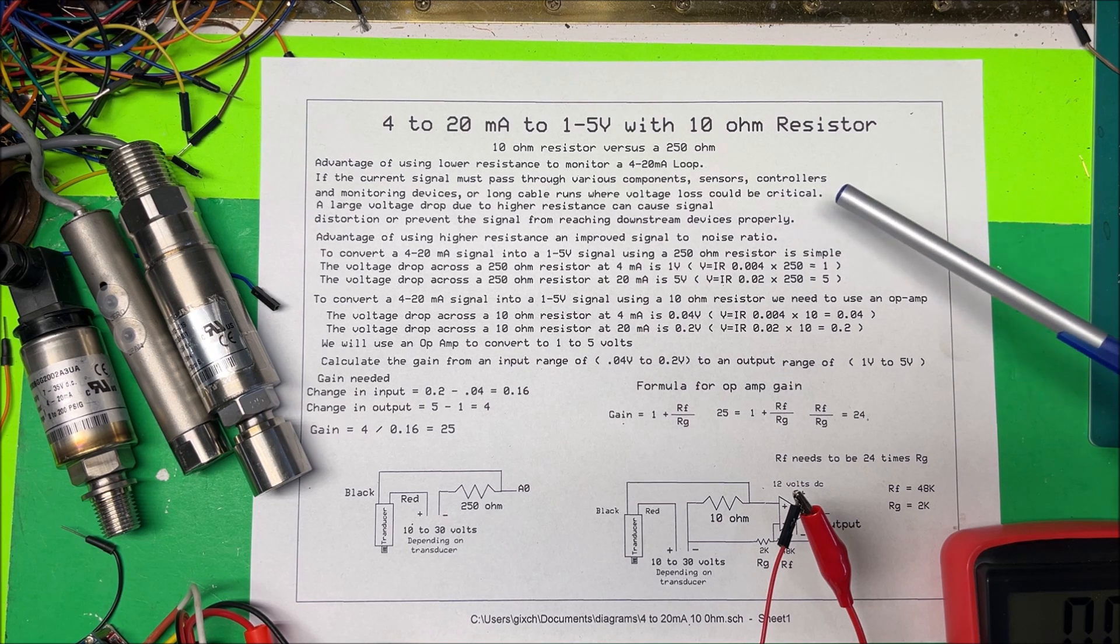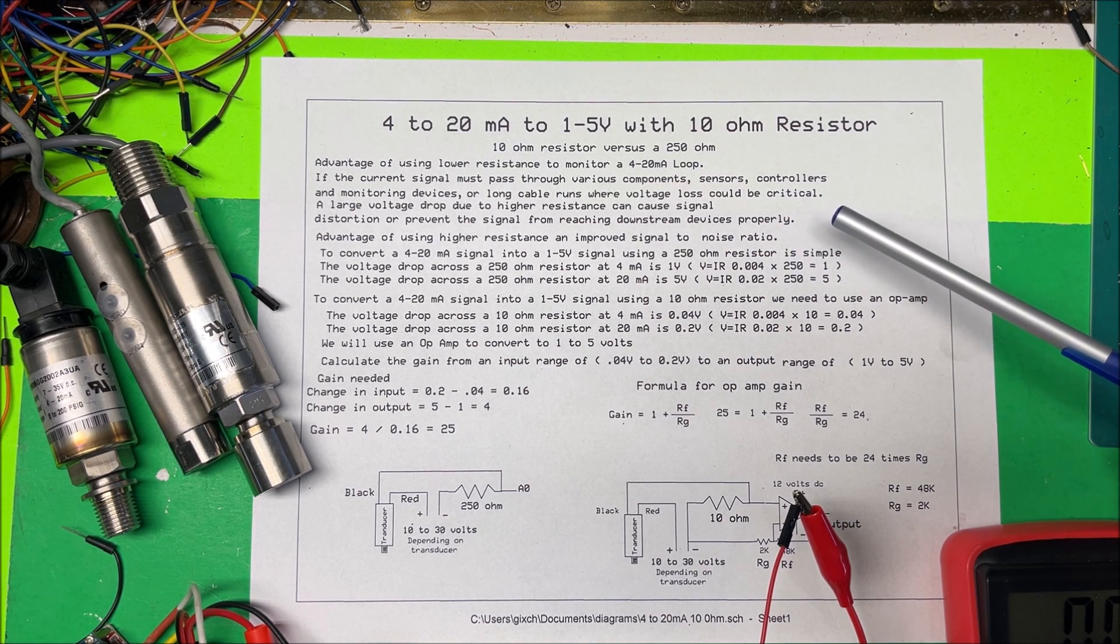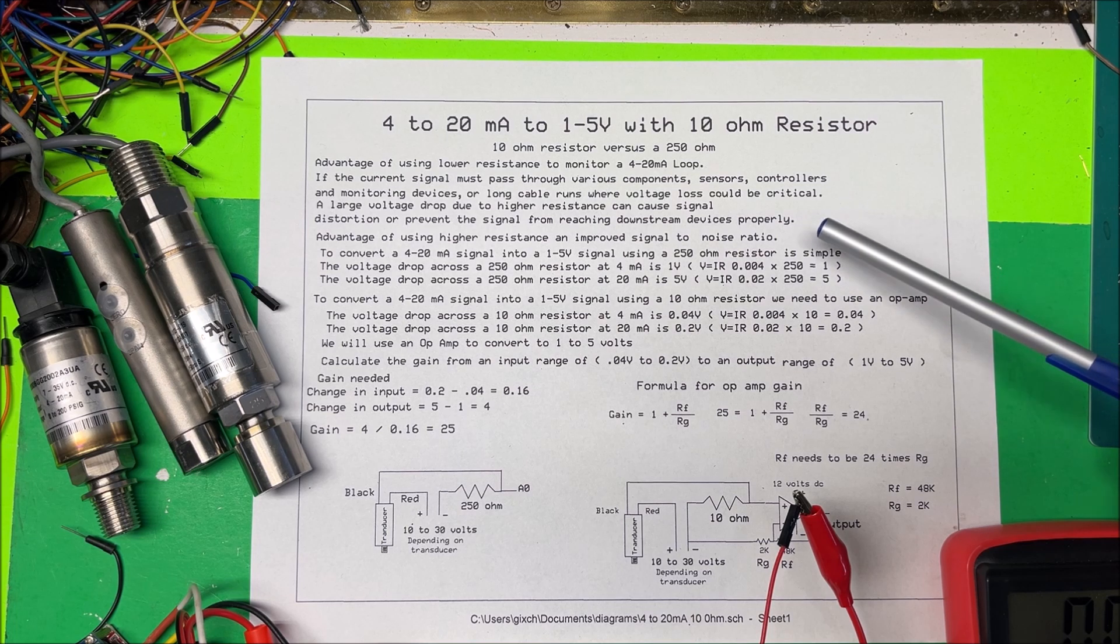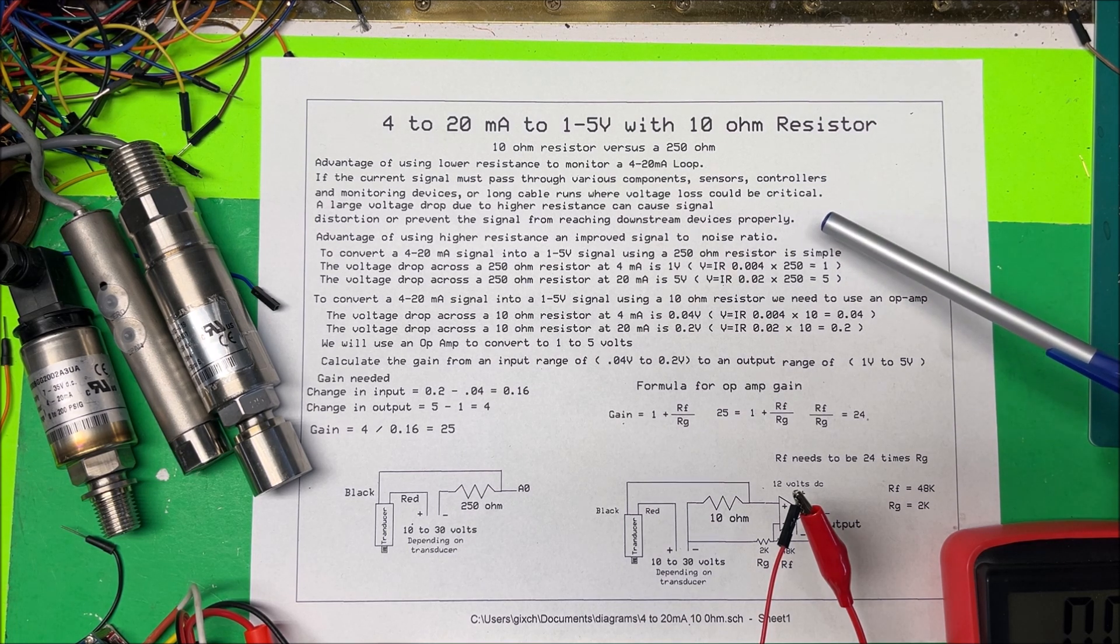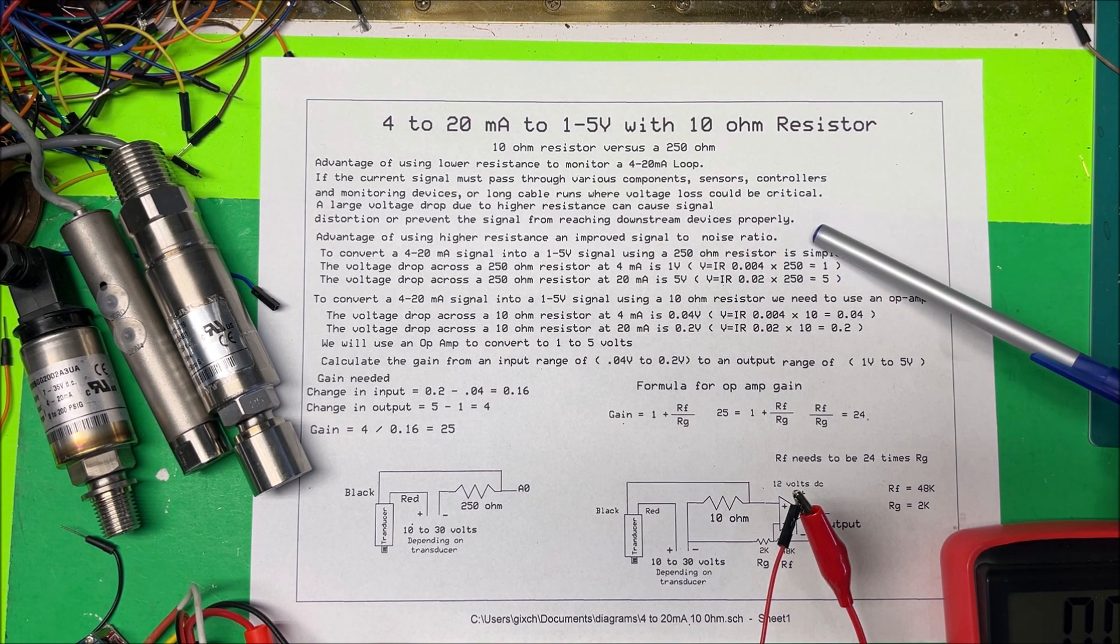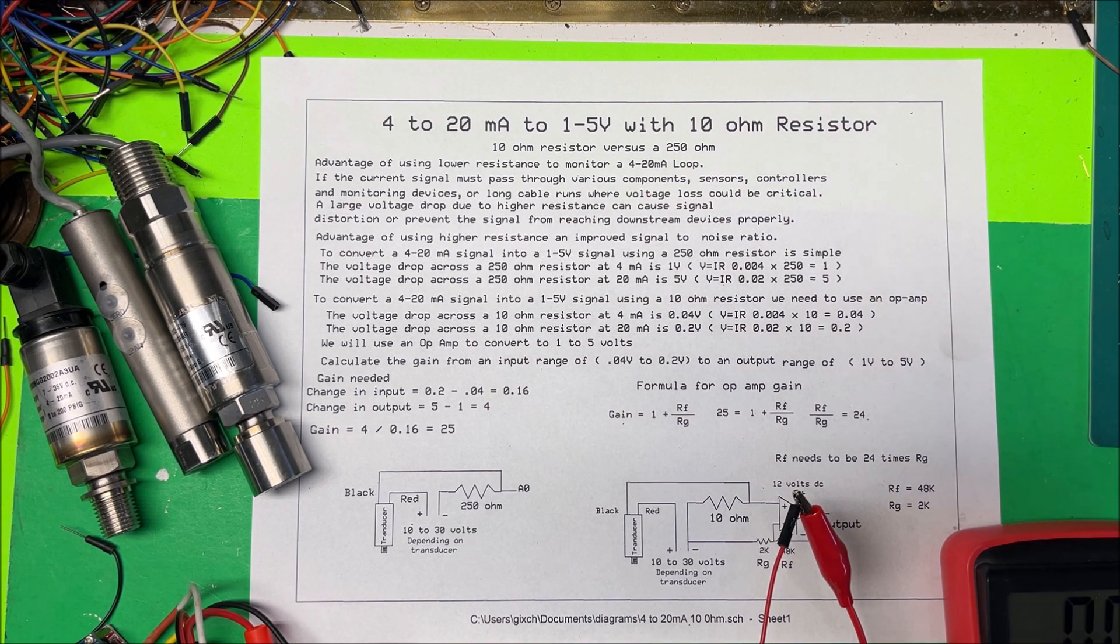Now if you can, it's better off to use the 250 ohms because it has higher resistance and it's going to improve the signal to noise ratio. But if you have to, we can use the 10 ohm resistor.